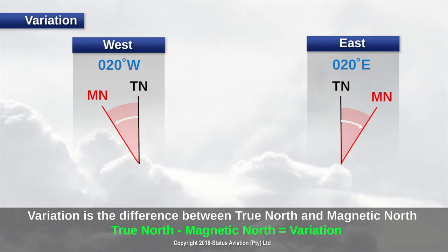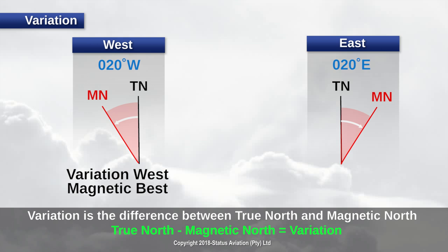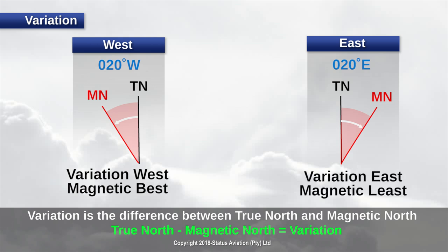For variation direction, we can use a memory aid which goes as follows: variation west, magnetic best; variation east, magnetic least. This simply means that if the magnetic direction is larger than the true heading, then variation is west. And if the magnetic direction is smaller than the true heading, then variation is east.